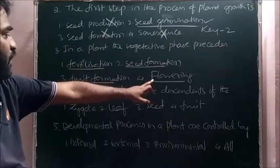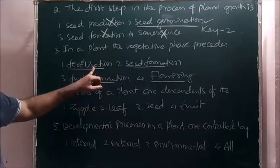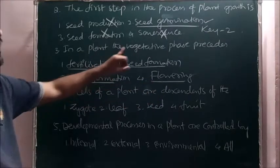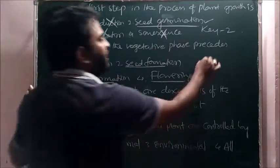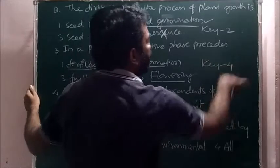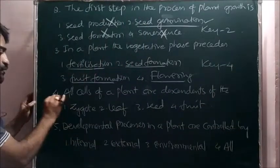After flowering, flowering occurs. The flowering is followed by fertilization. Fertilization is followed by seed formation. Seed formation precedes fruit formation. Hence here key is four. Next question, four.